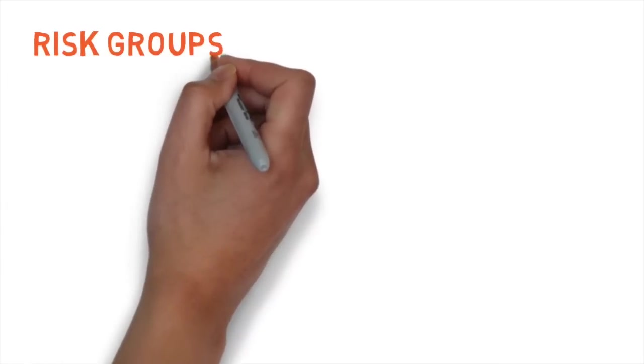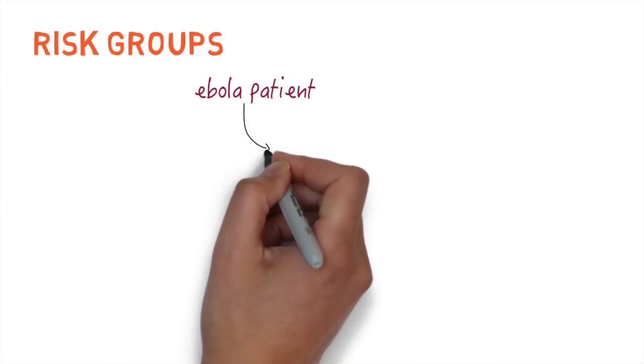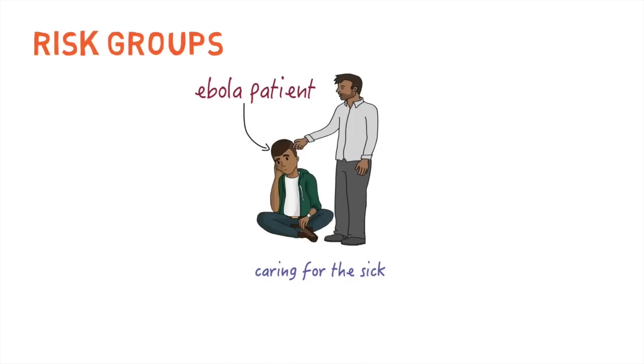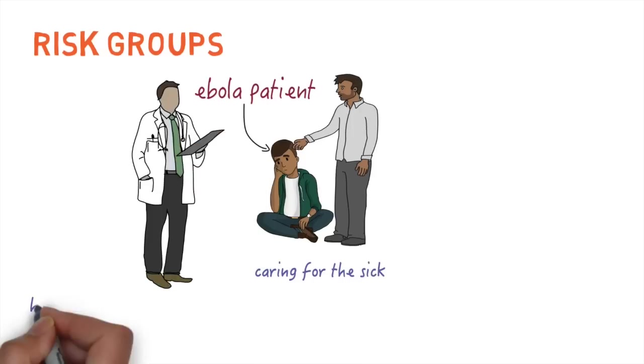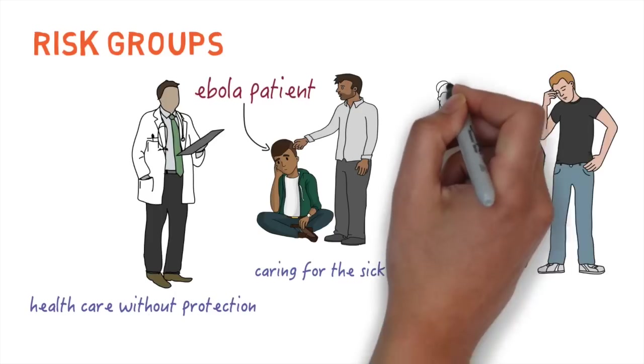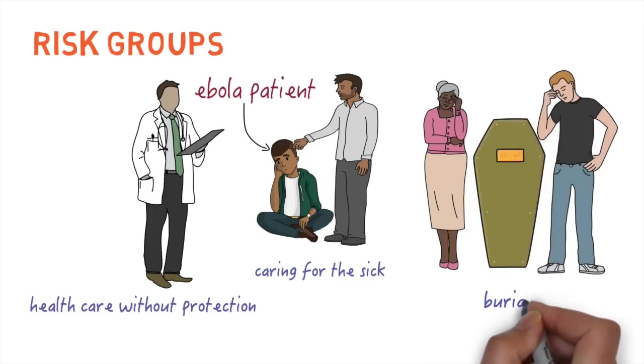Those who are most at risk of getting Ebola are those who have contact with a sick person's body fluids. This includes family and friends who care for those who are sick, healthcare staff looking after patients without wearing adequate protection, and people who participate in traditional burial practices that involve contact with the dead body.